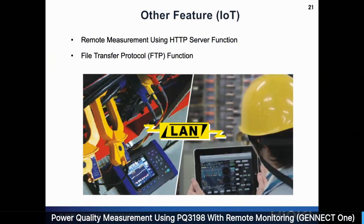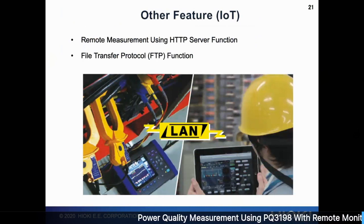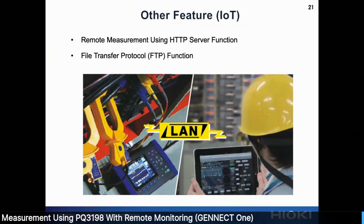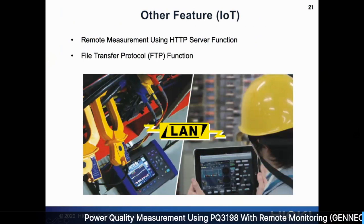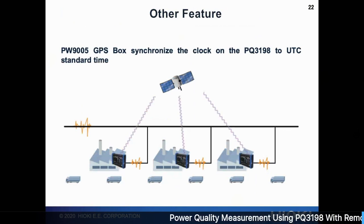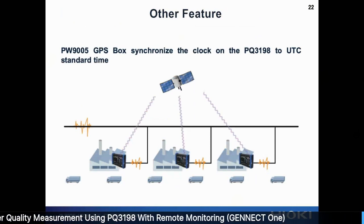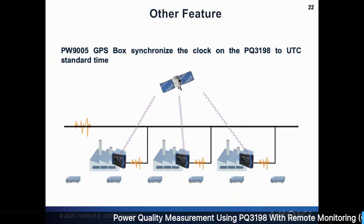Our PQA has a LAN port, enabling IoT capability. You can hook it up to your factory LAN or to a router with a SIM card and do remote monitoring using an HTTP internet browser. For customers who want FTP automated downloading, you can set that up too — everything is automated and data is sent to your laptop. The PQA can also connect to a GPS box PW9005 and synchronize to UTC standard timing, which is very useful when you have several PQAs and need all timings synchronized for relay discrimination based on timing.